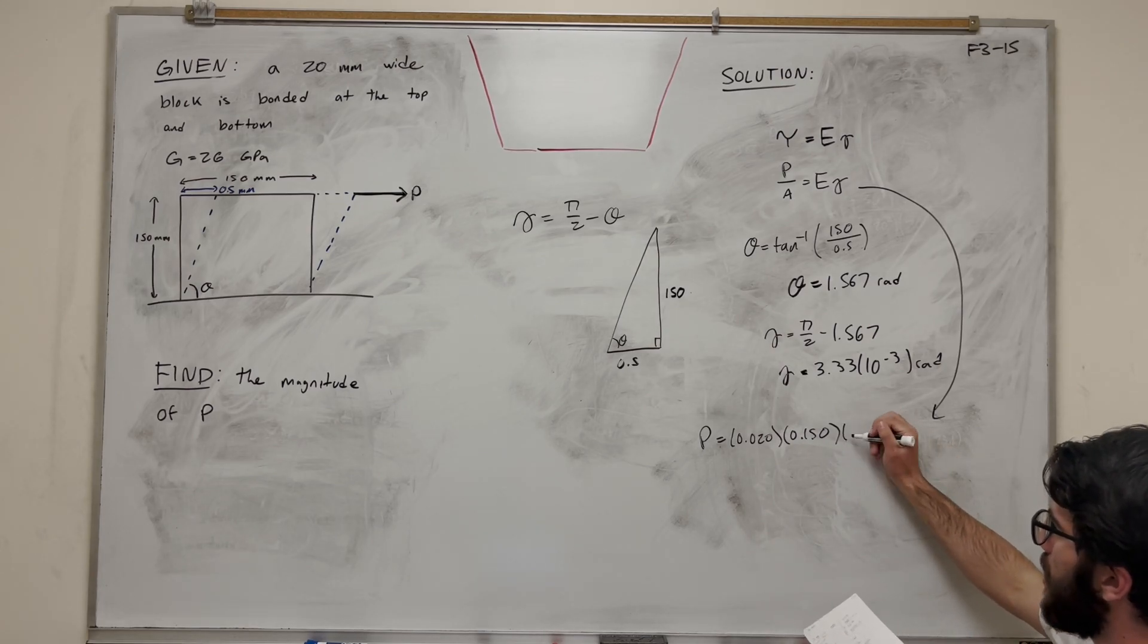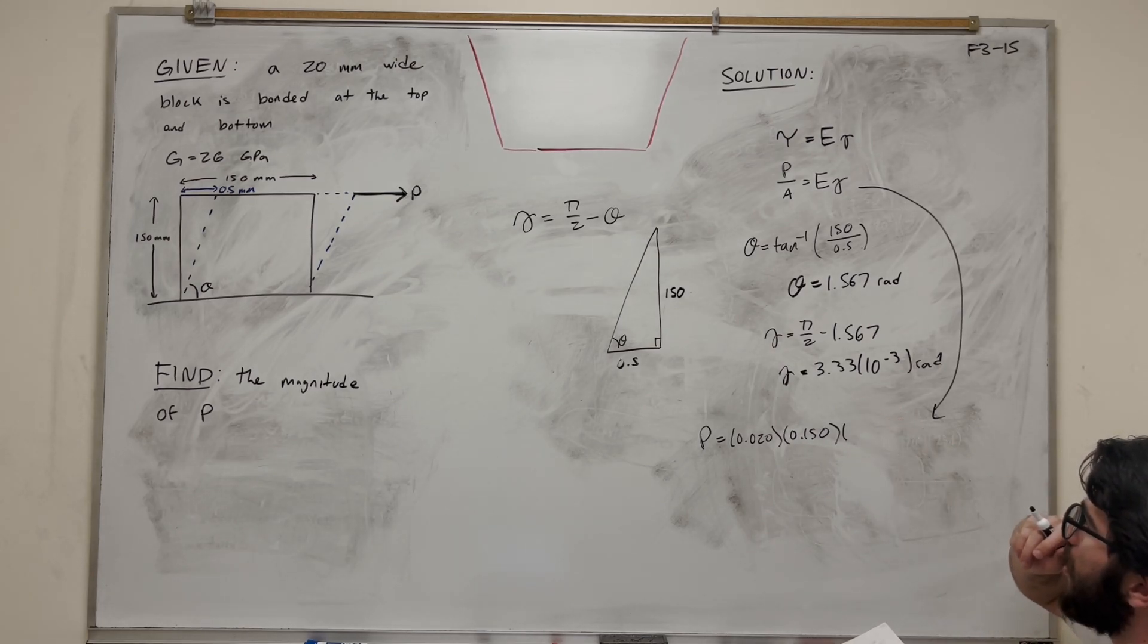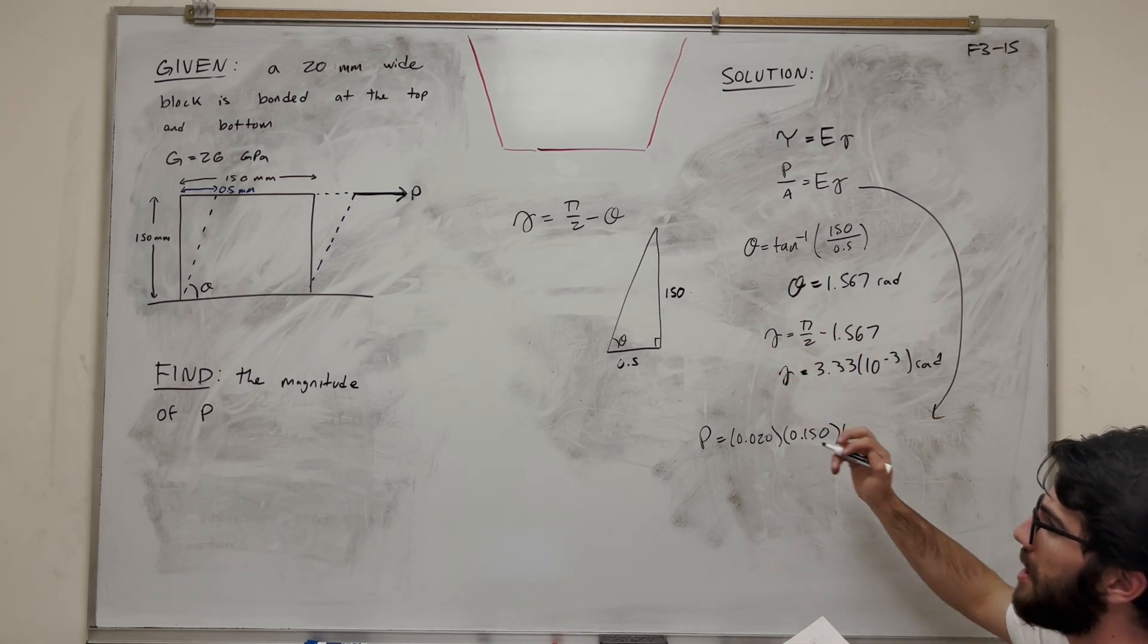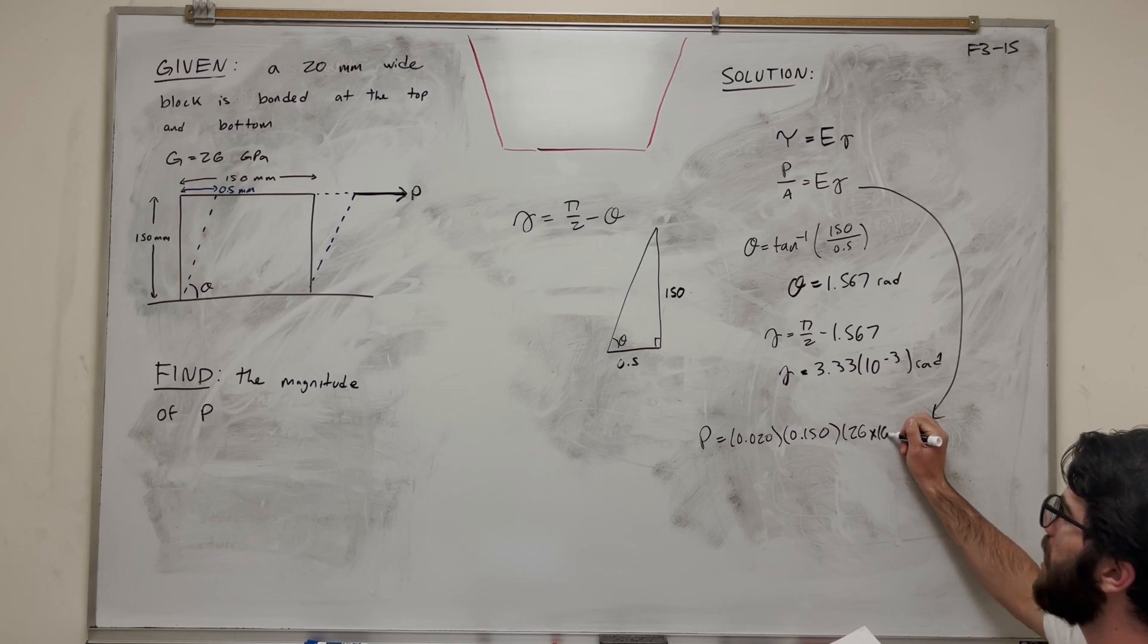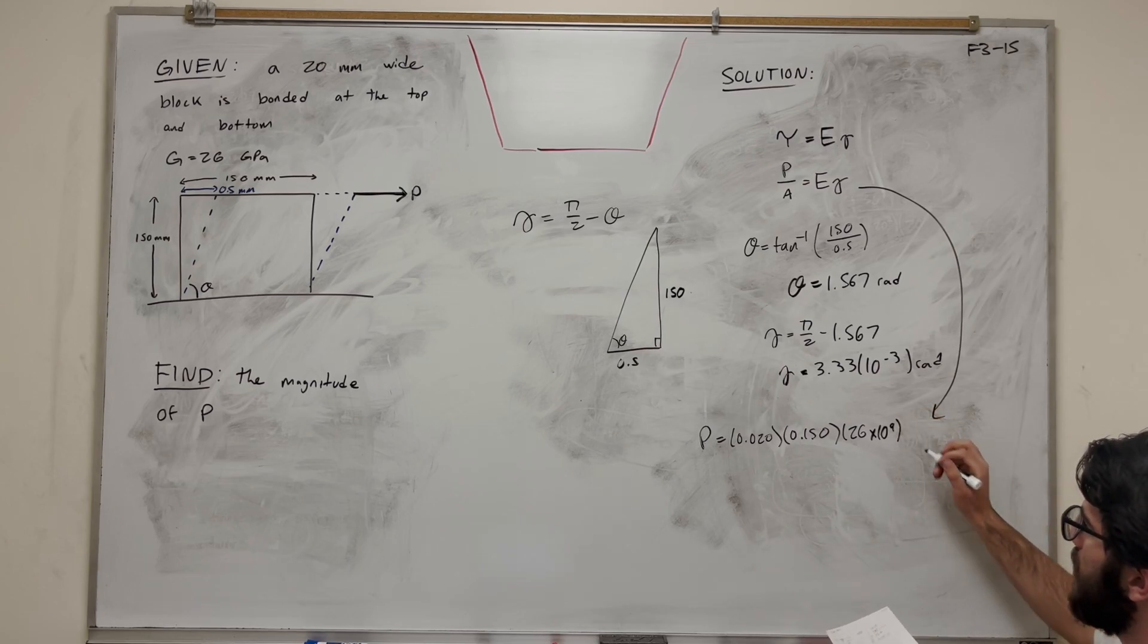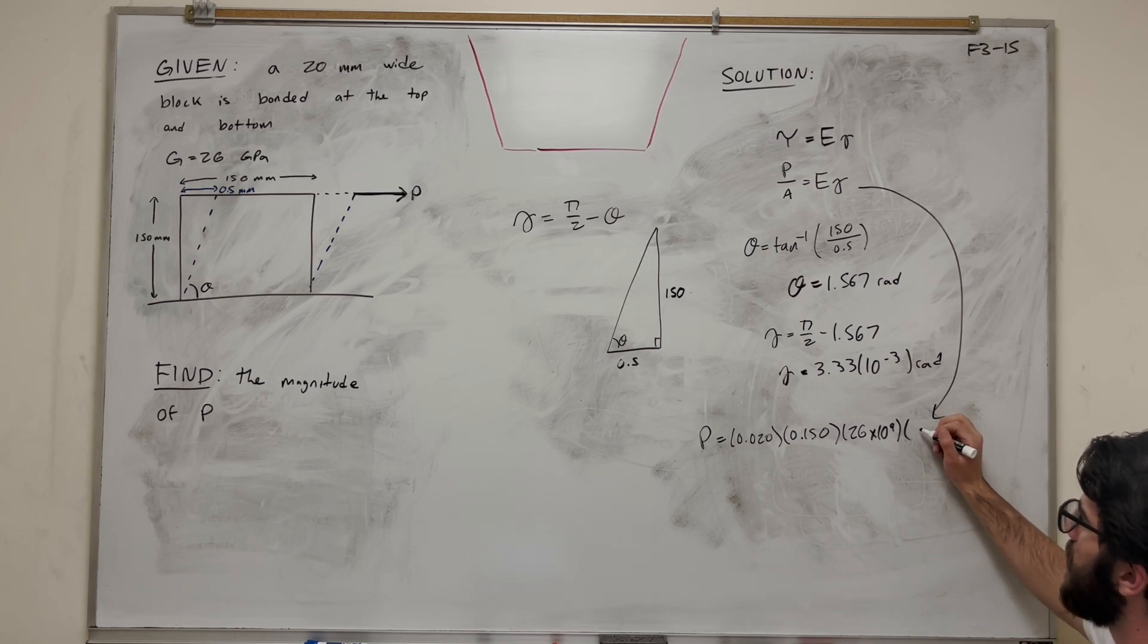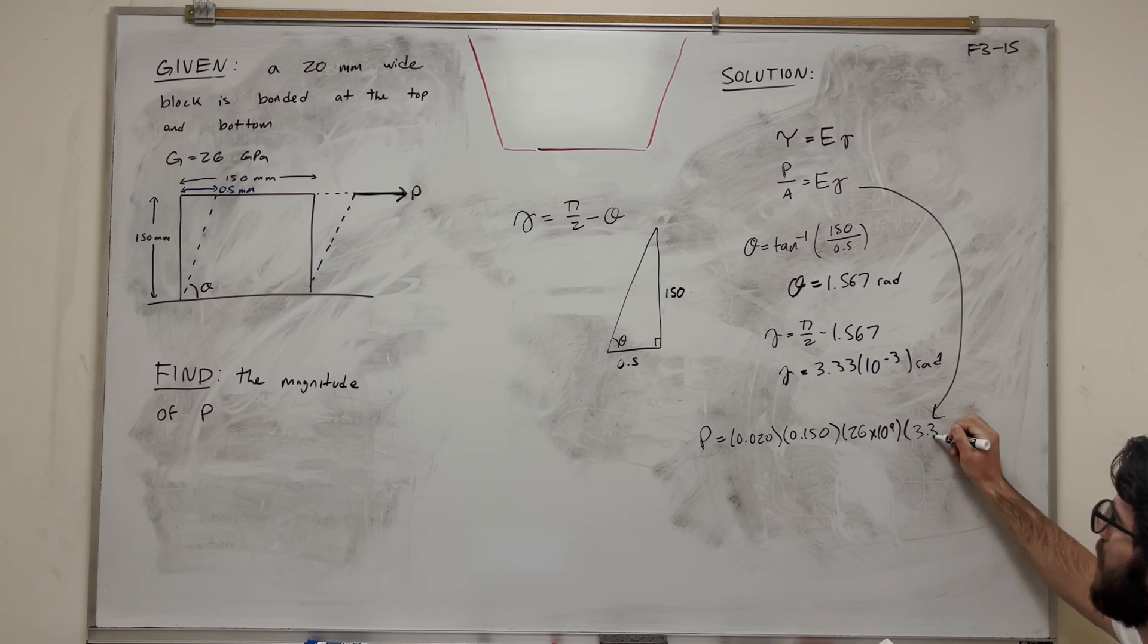Then we're going to take modulus of elasticity, 26 GPa. Giga is 10 to the ninth, so we're going to do 10 to the ninth. And then finally, our shear strain - 3.33 times 10 to the negative 3.